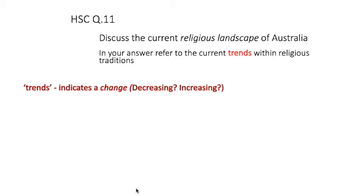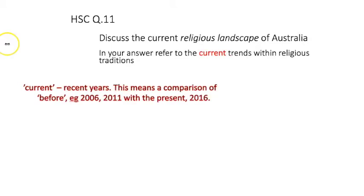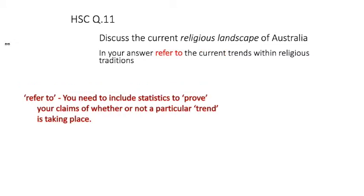Trends means something is decreasing, increasing, or staying the same. 'Current' means recent — this could be a comparison of before, say stats from 2006 or 2011 with the present landscape outlined in the 2016 census. 'Refer' means you need to include statistics to prove your claims of whether a particular trend is taking place — whether there's an upward movement, a downward movement, or it's fairly static.